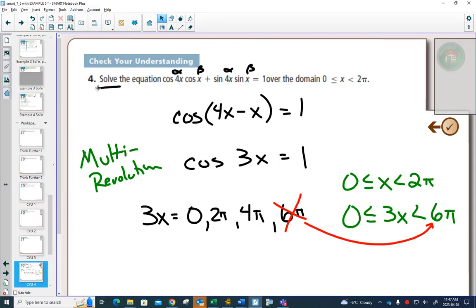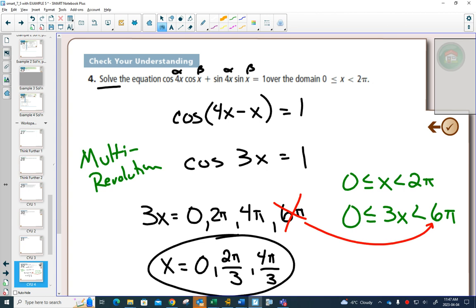Then, the last step for a multi-revolution question, the original question said solve for x. We've solved for 3x. We can solve for x by taking each of these answers and dividing it by 3. And now, all of those answers are between 0 and 2 pi.